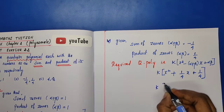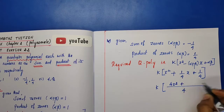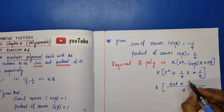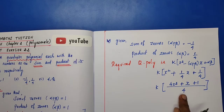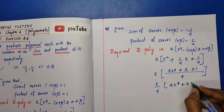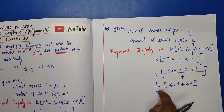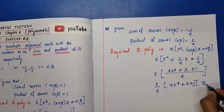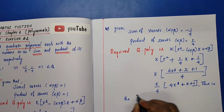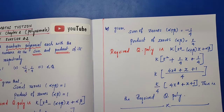The LCM of the bracket term is 4. Multiplying through by 4, we get k/4 times [4x² plus x plus 1]. The required quadratic polynomial satisfying these two conditions is 4x² plus x plus 1.